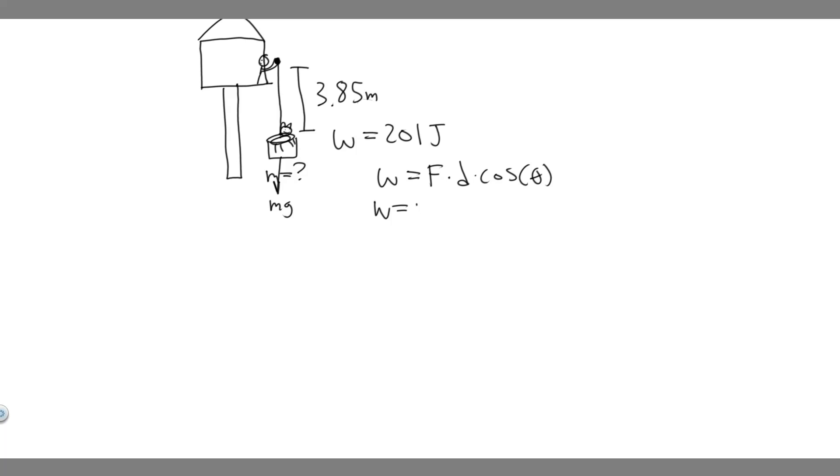So really, the work is going to be equal to the mass times the gravity times the distance times the cosine of theta. And so what you should notice is we're given the amount of work that this is going to take. It's going to take 201 joules. We know what g is. It's just going to be 9.8, the acceleration due to gravity. We know the distance.